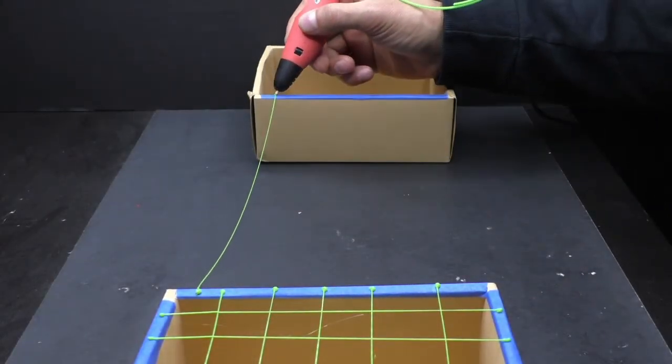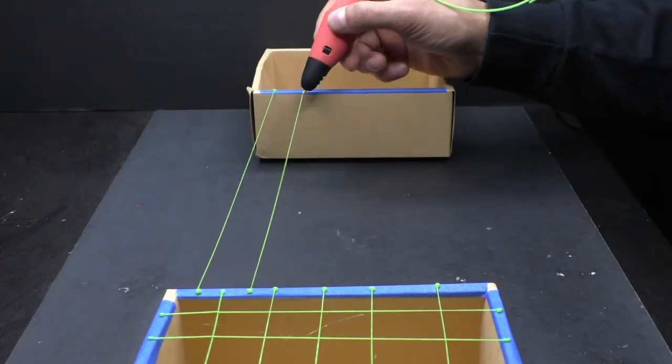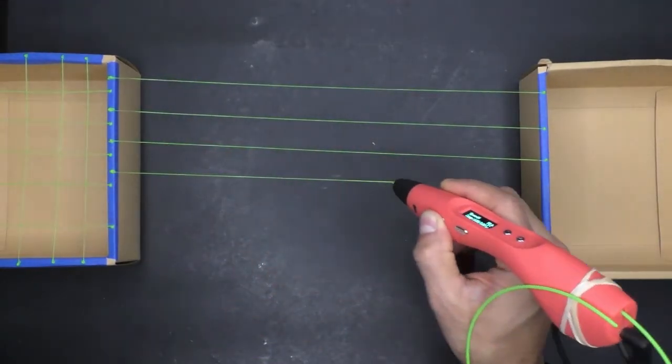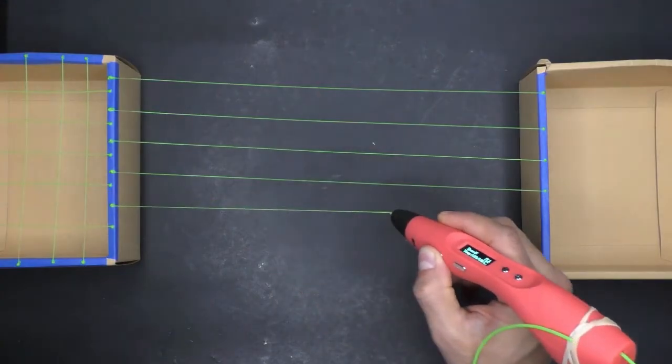To increase difficulty, just keep moving things farther and farther apart. If you get to really large spans, you can just bridge between two separate boxes.